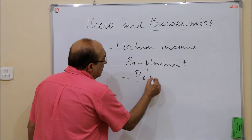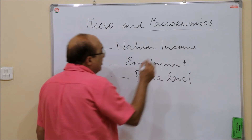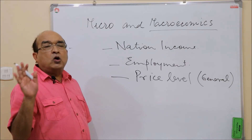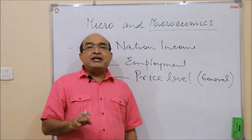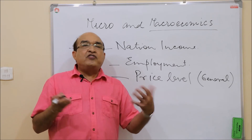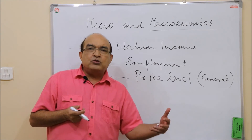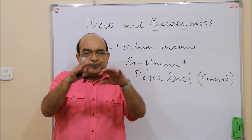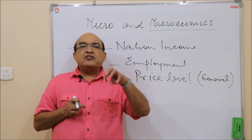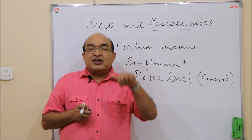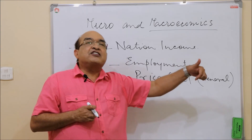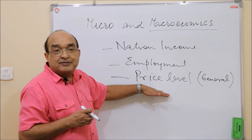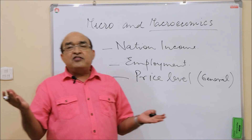Still another macro variable is the general price level — not the price of any particular good or service, but the overall price level. The general price level is computed by taking representative commodities, forming a basket of commodities, recording their prices, and assigning weights to each commodity based on its respective use in the economy. That is how the general price level is determined, and macroeconomics deals with this.